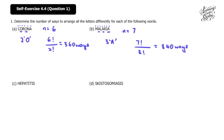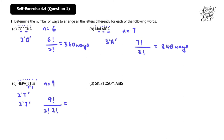For part (c), 'hepatitis': there are 9 letters. We check for repeated letters — there are 2 T's and 2 I's. So the number of ways will be 9 factorial over 2 factorial times 2 factorial, and the answer is 90,720 ways.